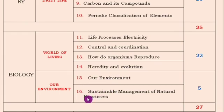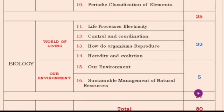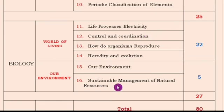Our environment and sustainable management of natural resources — from these 2 lessons you get 5 marks, and together for biology you will get 27 marks. So totally 80 marks for science. You must plan ahead: for example, sustainable management of natural resources carries only 2 marks, while control and coordination carries 7 marks. If you skip the higher-weighted lesson and only study the lower-weighted one, you cannot reach a good score. So you should know the weightage of each lesson, then plan how much concentration to give to each.